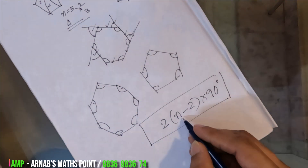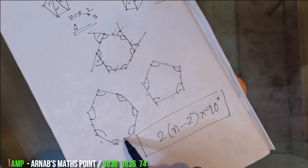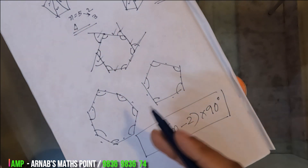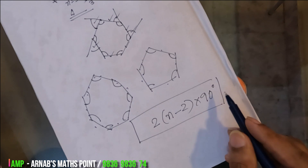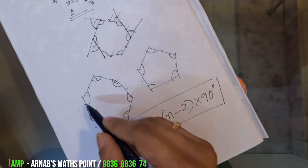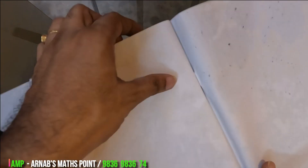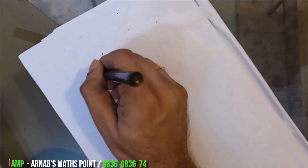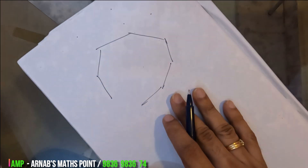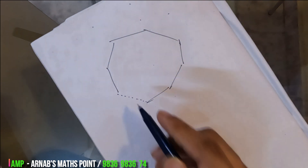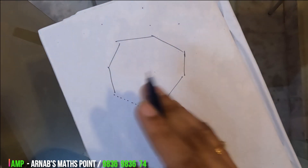This is the number of sides. When we see the number of sides, we have to apply the formula for the sum of all interior angles. Looking at this figure, you can see the number of sides is 8.